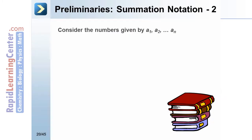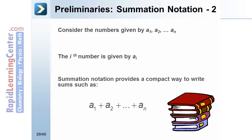Consider the numbers given by a₁, a₂, through aₙ. The ith number is given by a sub i. Summation notation provides a compact way to write sums such as a₁ plus a₂ all the way through aₙ.